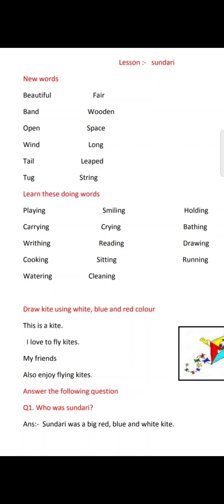Bobby shooed the dog away and again tried. This time Sundari leaped up in the air. Bobby bhagaa diya us doggy ko jisne kite ki tail apne muh mein pakdi thi, jis kaaran wo kite ura nahi paa rahi thi. Bobby ne dobara try kiya — kite ache tariqe se hawa mein ura gayi. She flew up, up, up in the air!